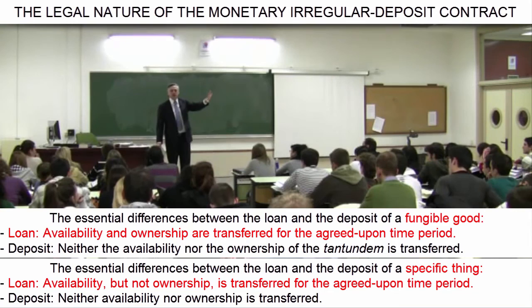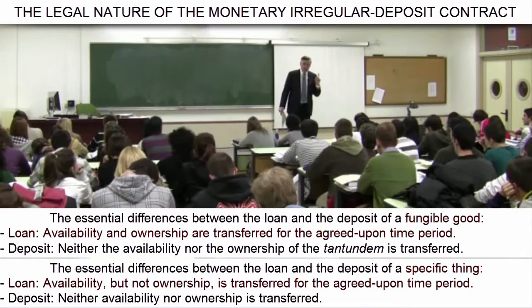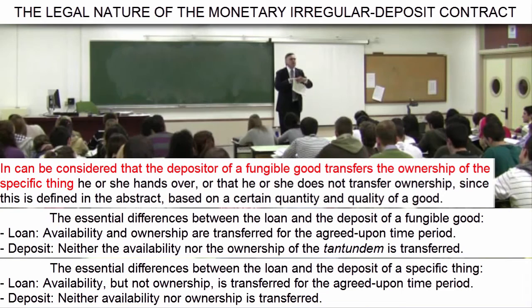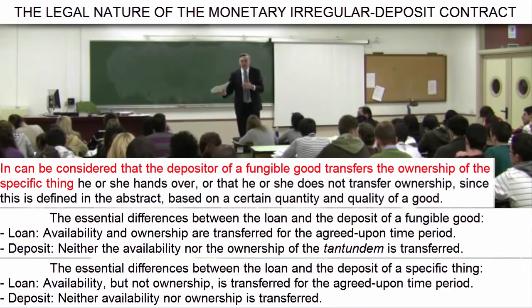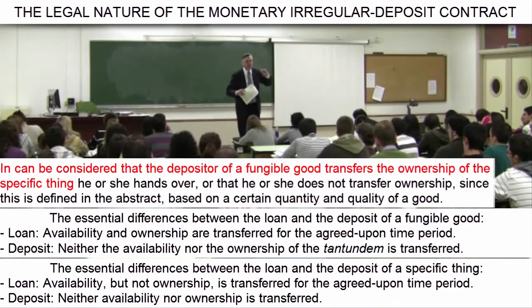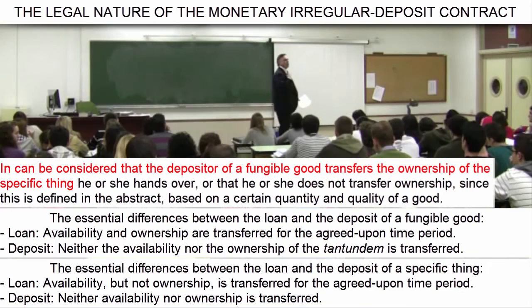In the loan, both availability and ownership are fully transferred. Meanwhile, in the deposit — take note, this is important — there are two possible theories. The first holds that, because the specific molecules or parts of the fungible good are indistinguishable when the deposit is made, ownership is lost and transferred to the depository. However, even if this is so, in no way is availability lost or transferred, because the depositor retains the availability of the good at all times. The depository fulfils her duty by keeping the equivalent in quantity and quality — the tantundum — always at the disposal of the depositor.